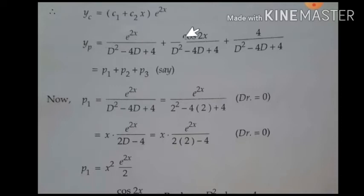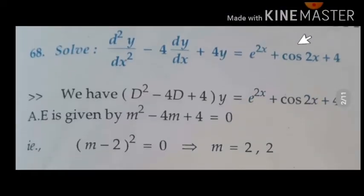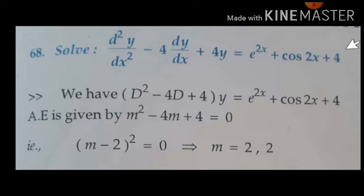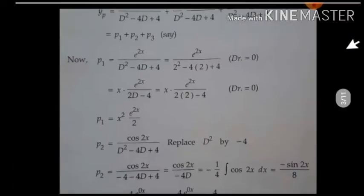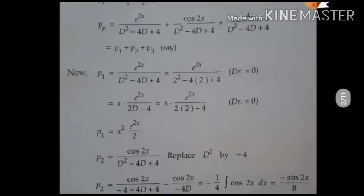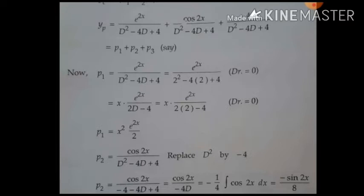Now coming to the particular integral. There are three functions on the right-hand side, so we apply the inverse differential operator to each function separately: one for e^(2x), one for cos 2x, and one for the constant 4. These are separated with plus signs. Let me denote them as P1, P2, P3 and find each separately.